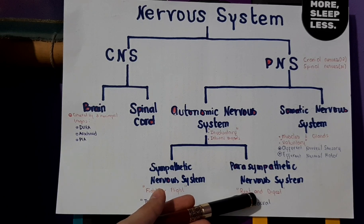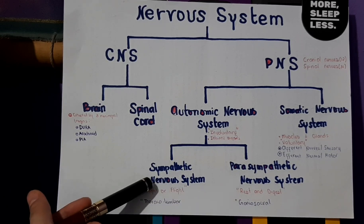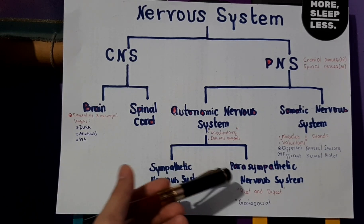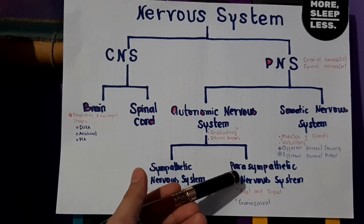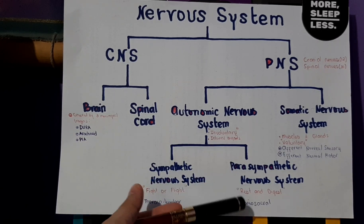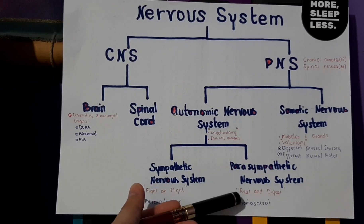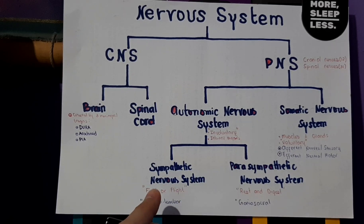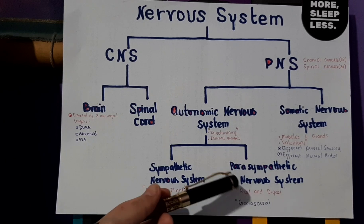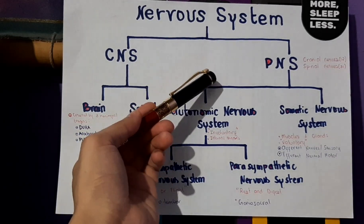In the parasympathetic state, the pupil which dilated during the emergency will now constrict, and the body gradually returns to normal functioning — that is why it is called rest and digest.